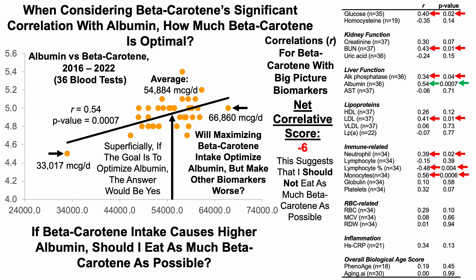That suggests I should not eat as much beta-carotene as possible, as it may optimize albumin but make a lot of other things worse. With that in mind, my current beta-carotene intake corresponding to my next blood test is 50,000 micrograms per day or 50 milligrams per day — purposely below my average intake of about 55,000 micrograms per day, as when I have a net negative correlative score, I aim for less than my average intake.